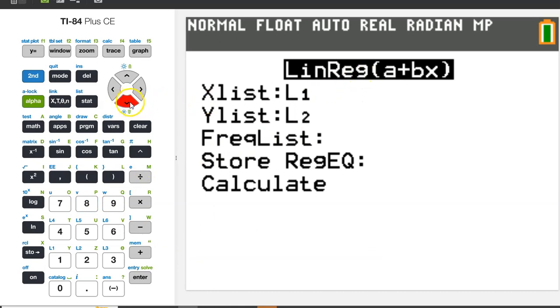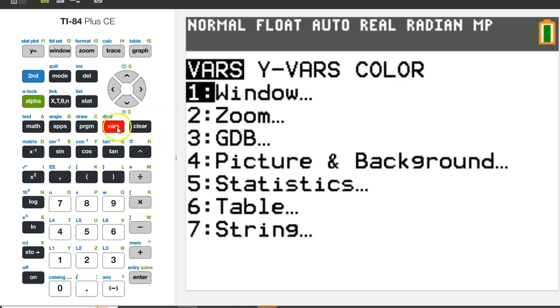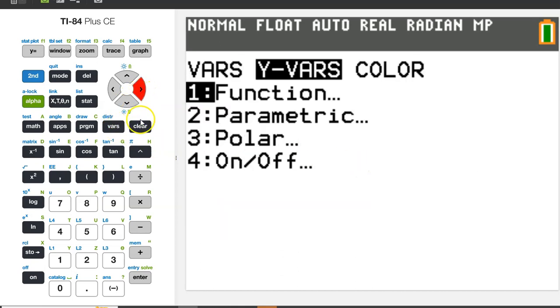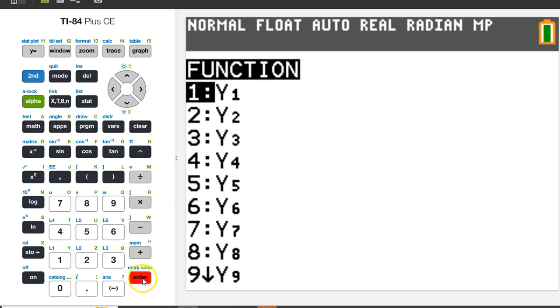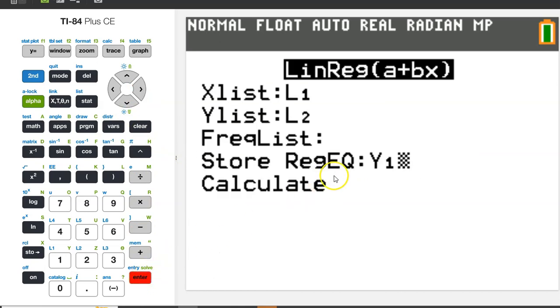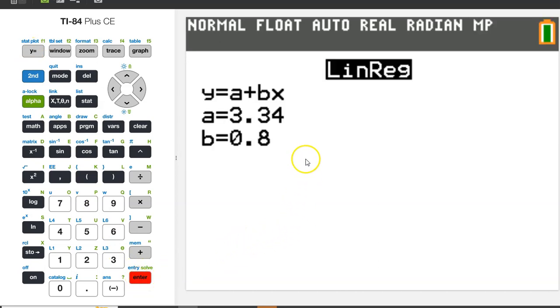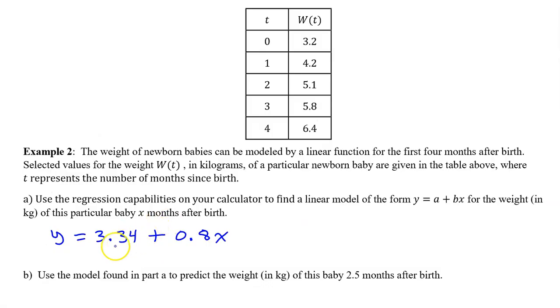Before you calculate the regression model, I always suggest that you store the model as Y1. So hit the VARS button, switch to YVARS, hit enter, and enter again. This way, the regression model will be waiting for us here under the Y equals area if we need it. Hit enter a couple more times, and kabam, there's your regression model. Plugging in the values of A and B, we get Y equals 3.34 plus 0.8X.